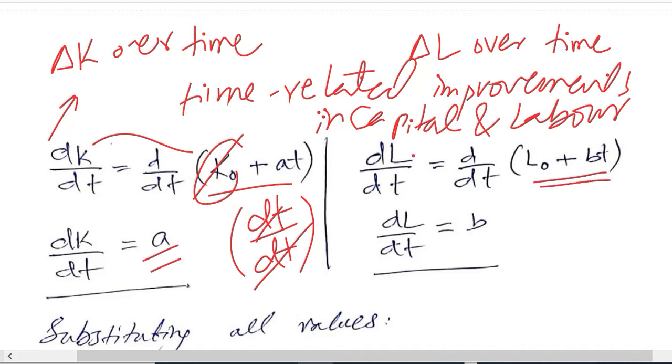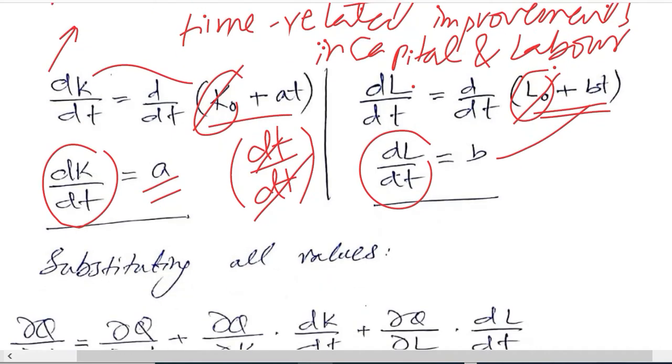In the same way, I can differentiate this with respect to t. That is this function, the labor function. And b will be left whereas L naught will be gone because it is free of time variable. So I have these two values as well. So third and fifth, fourth and fifth values, they are found which have their own economic interpretations.